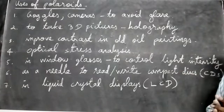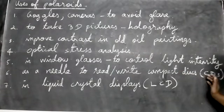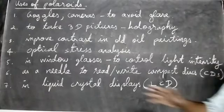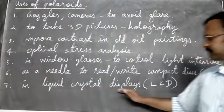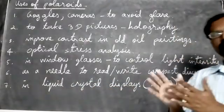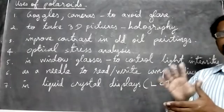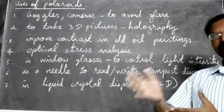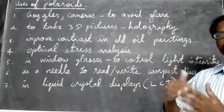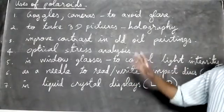Next one, in liquid crystal displays (LCD). LCD TV or in calculators also, you can see that you can use the polaroid. That will change the light ray vibration, and then you can see the information on screen. So these are some of the uses of polaroids.